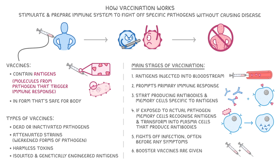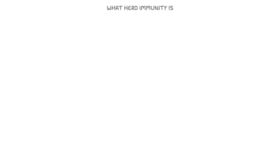Sometimes, booster vaccines are given to extend immunity over a longer time by making sure those memory cells remain active. Next, let's look at what herd immunity is. We use the term herd immunity to describe protection from infectious diseases that happens when a large portion of the population becomes immune to a disease.